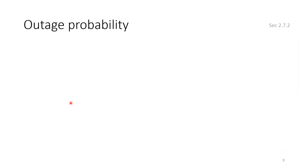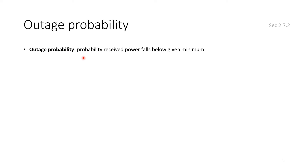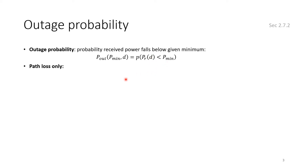What is outage probability? Outage probability is the probability that the received power falls below a given minimum threshold — that is, outage means no service. Mathematically, it is a function of the distance and the minimum required power, specifically the probability that received power falls below a given threshold.